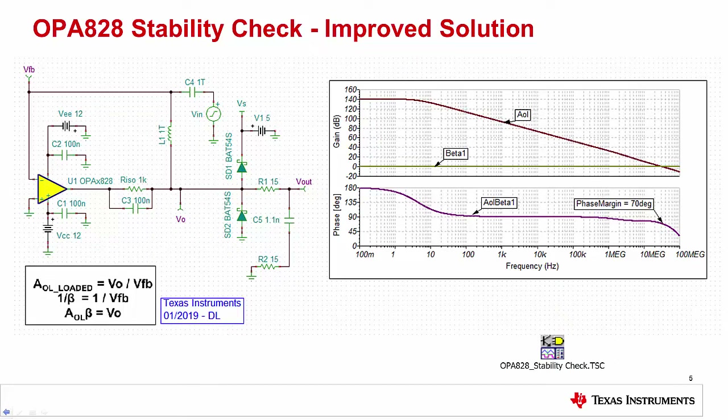It's important to note that adding output impedance inside the amplifier's feedback loop can affect the stability of the amplifier. Thus, when using this method, it is important to do a stability test for your solution. For a more detailed overview, please see the Precision Lab series on op-amp stability.